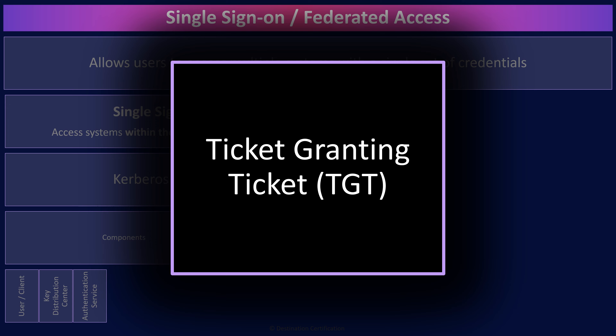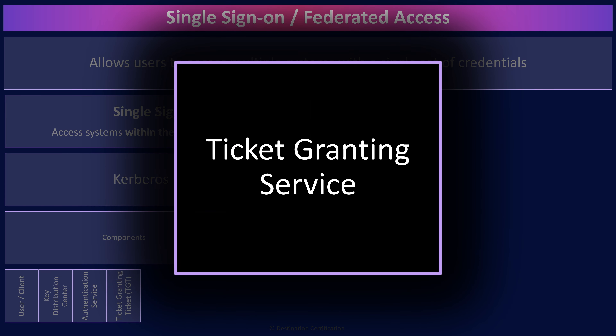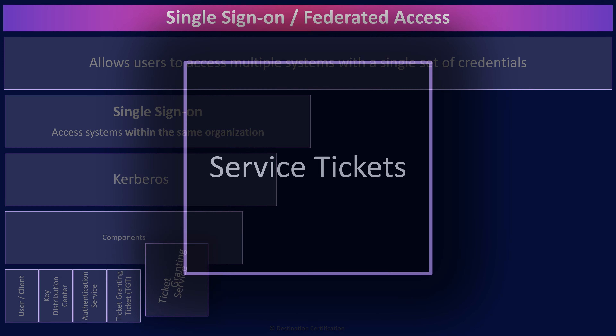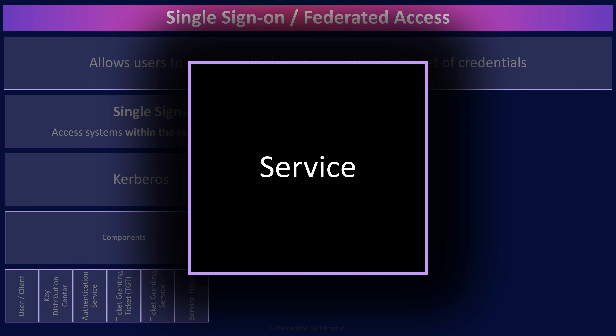Along with a couple of other messages from the client indicating what service the client wants to access, the ticket granting service will check that the service exists and if the user is authorized to access the service. If so, the TGS — the ticket granting service — will create a service ticket and send that back to the user. The service ticket is what the user sends to the application to get access. The user also caches the service ticket for any future access while the ticket is valid and has not yet expired.